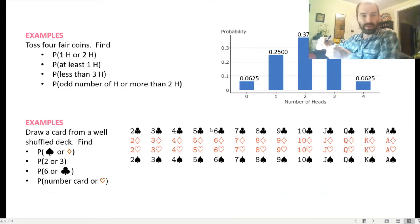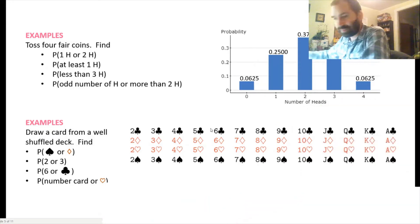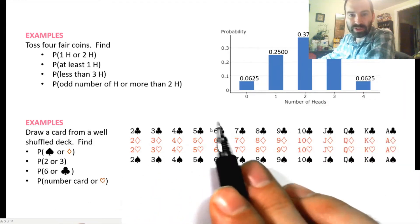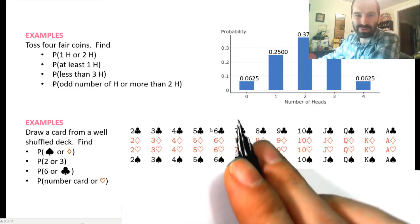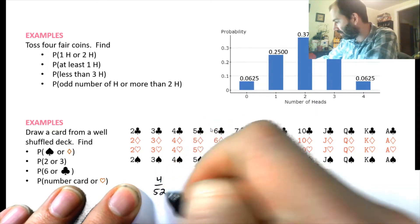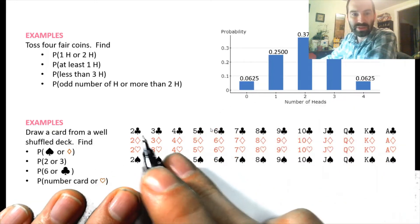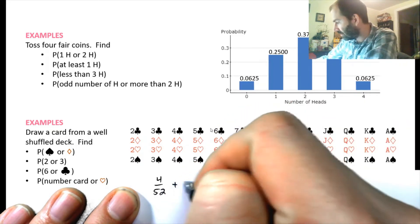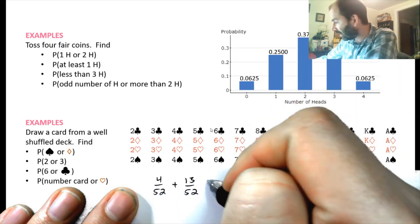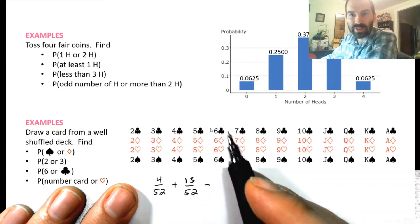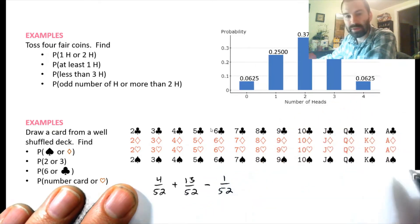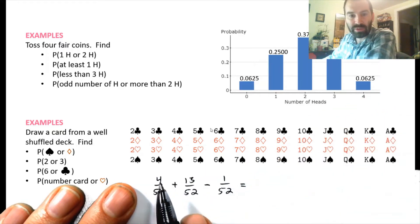P(six or clubs): P(6) = 4/52 since there are four sixes; P(clubs) = 13/52 since there are 13 clubs. P(six and clubs) = 1/52 because the six of clubs is one specific card. So P(six or clubs) = 4/52 + 13/52 − 1/52 = 16/52.